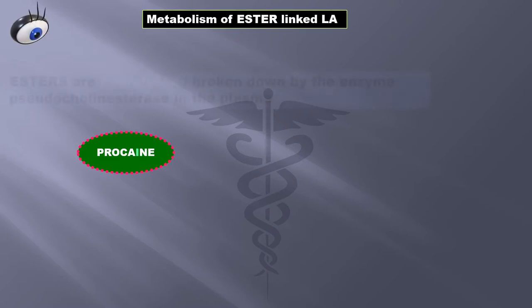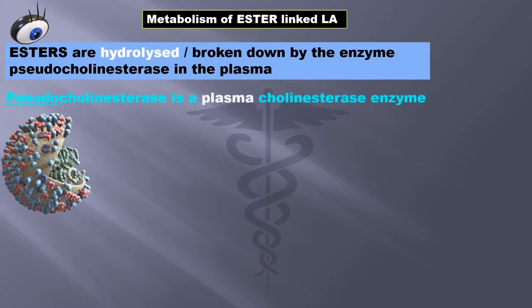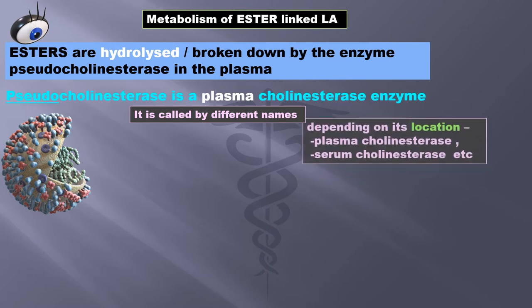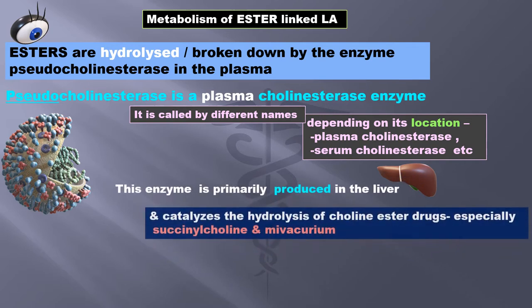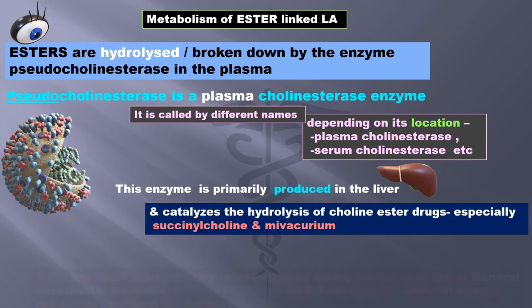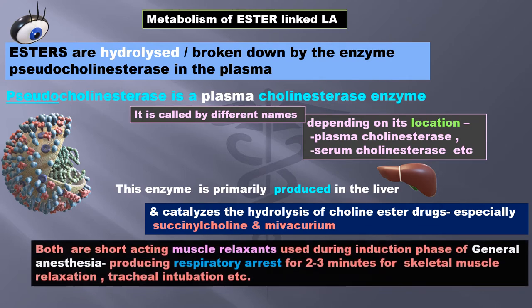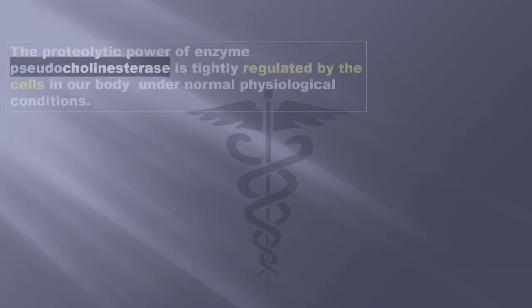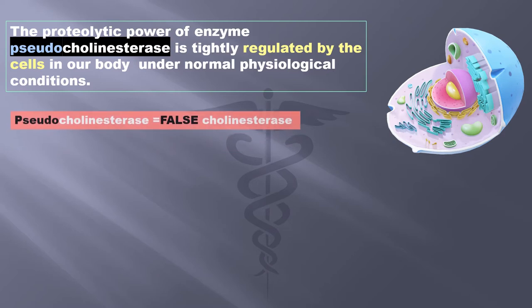Let us now look at the metabolism of ester-linked LAs. They are hydrolyzed — broken down — by the enzyme pseudocholinesterase in the plasma. This pseudocholinesterase is a plasma cholinesterase enzyme called by different names depending on its location: plasma cholinesterase or serum cholinesterase, etc. This enzyme is primarily produced in the liver and catalyzes the hydrolysis of cholinester drugs, especially succinylcholine and mivacurium — both short-acting muscle relaxants used during induction phase of general anesthesia, producing respiratory arrest for two to three minutes for skeletal muscle relaxation and tracheal intubation. The proteolytic power of pseudocholinesterase is tightly regulated by cells in our body under normal physiologic conditions.